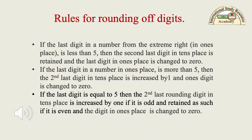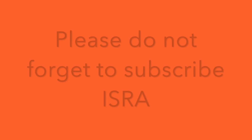Rules for rounding digits. First rule: if the last digit in a number from the extreme right in the ones place is less than 5, then the second last digit in the tens place is retained, and the last digit in the ones place is changed to 0. Third rule: if the last digit is equal to 5, then the second last rounding digit in the tens place is increased by 1 if it is odd, and retained as such if it is even, and the digit in the ones place is changed to 0.